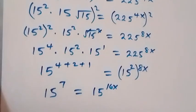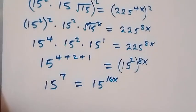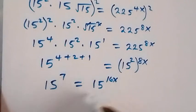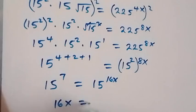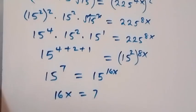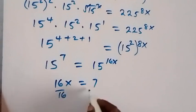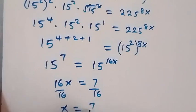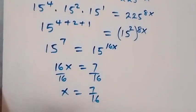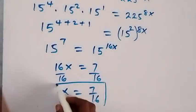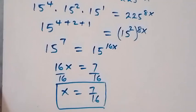We have seen this is equal, then we can equate the powers. That means 16x is now equals to 7, and when we divide both sides by 16, the 16 cancels out, and x equals to 7 over 16. So we have the value of x in this problem to be equal to 7 over 16.